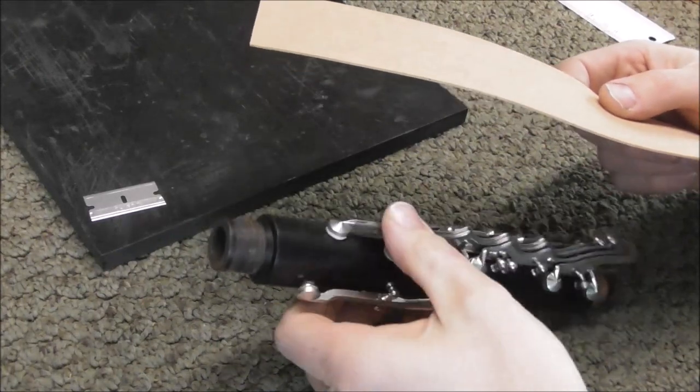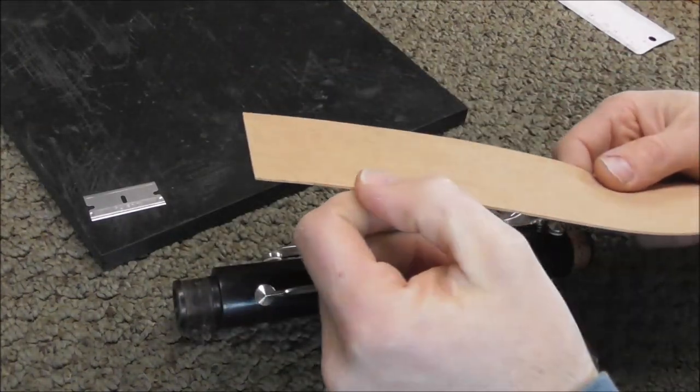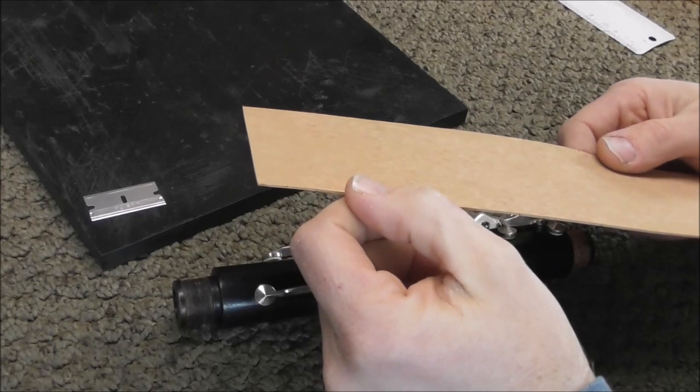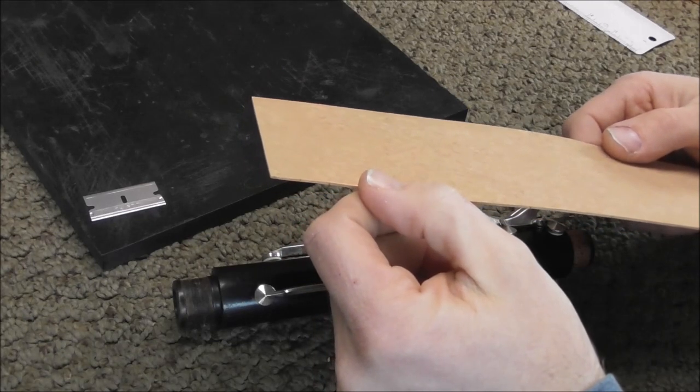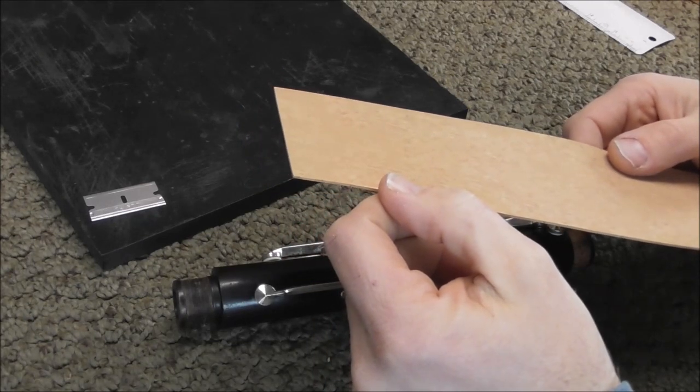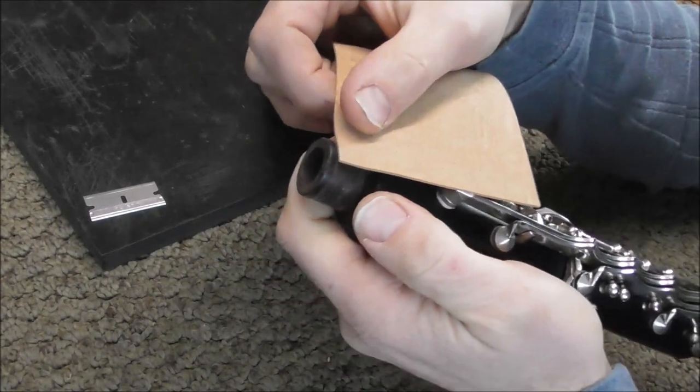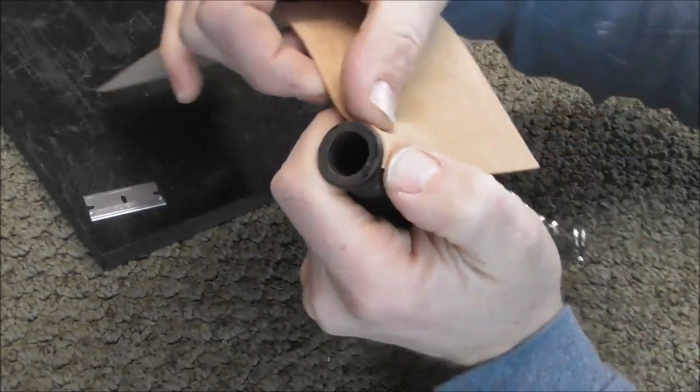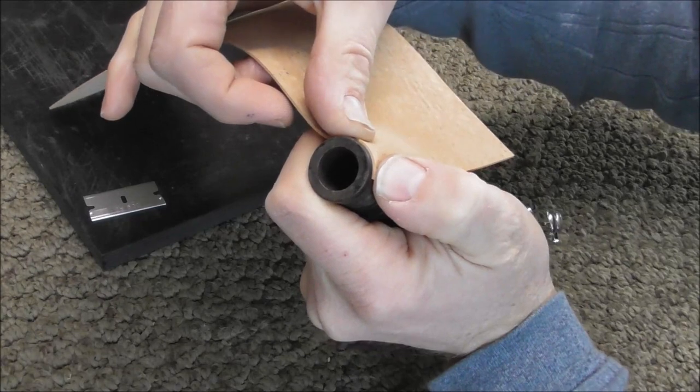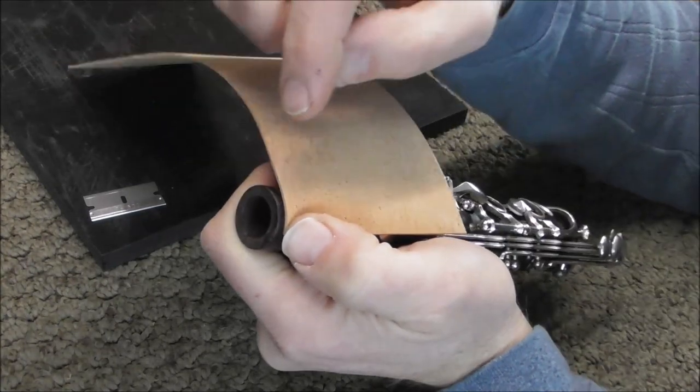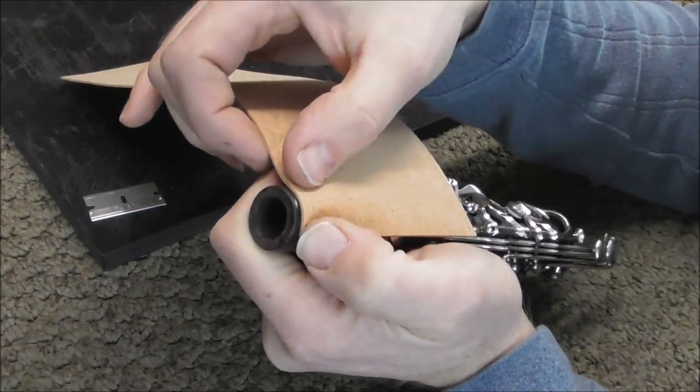Most clarinet tenons use the 3/64th or 1.2 millimeter thick cork. Some use a little bit thicker 1.6 millimeter or 1-1/16th inch. The way to tell is put the cork up to the cork track and it should stick up a little bit but not really far. And remember you will be sanding this to size after you're done gluing this on.